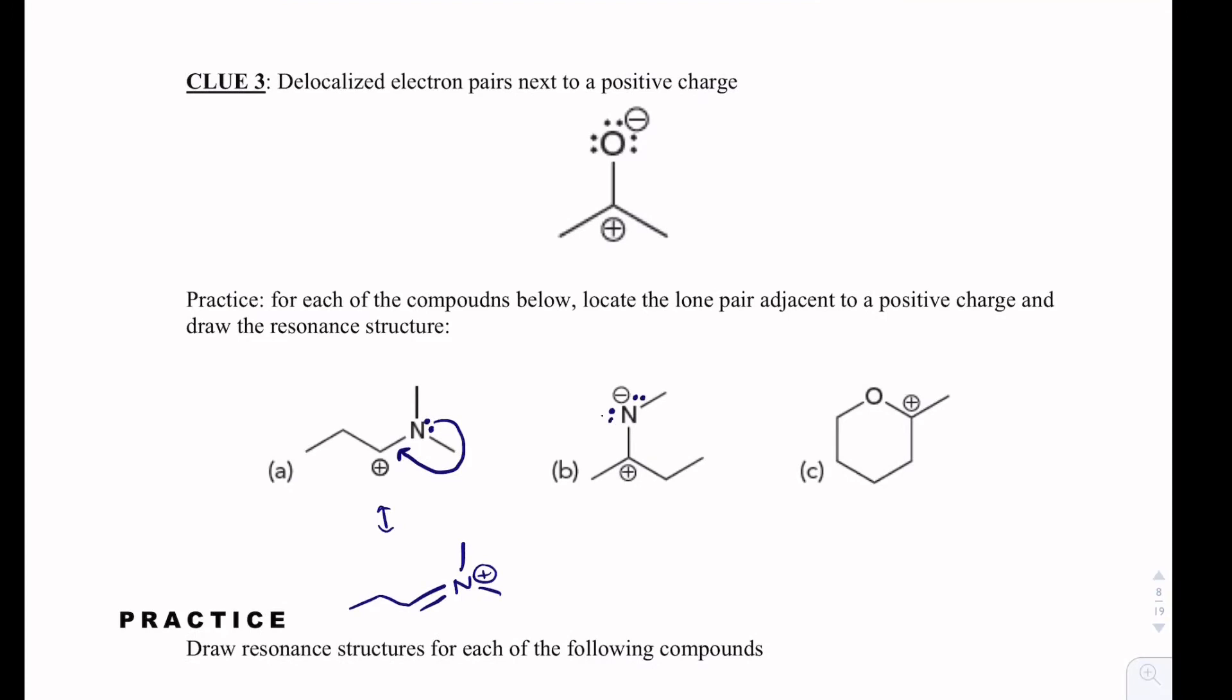And then we could have the same thing happening here. That one is actually making it neutral. This is a very stable structure. And then don't forget, you've got to be able to know when lone pairs exist, that we could do something like this. And those are all resonance structures.